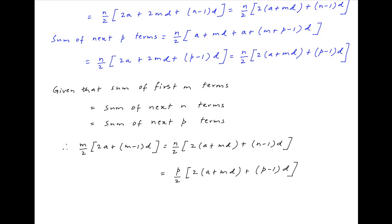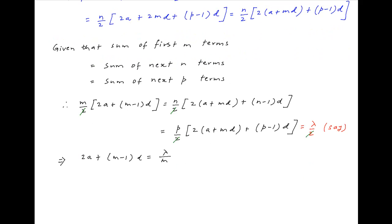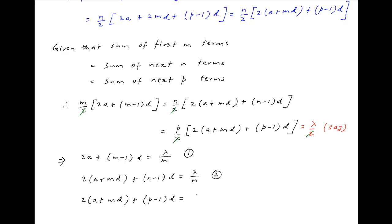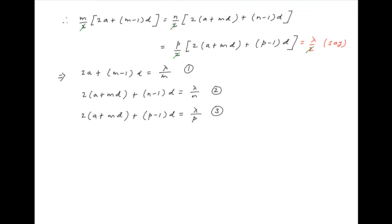Let's assume all of these terms are equal to lambda upon 2. The 2 cancels across all terms and we can write: 2a plus m minus 1 times d equals lambda upon m — let's call this equation 1. Similarly, 2 times a plus md plus n minus 1 times d equals lambda upon n, and 2 times a plus md plus p minus 1 times d equals lambda upon p — let's call it equation 3.